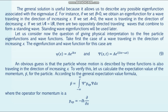If we set |A| = |B|, two oppositely directed traveling waves combine to form a standing wave. Standing wave eigenfunctions will be used later. Let us now consider the question of giving physical interpretation to the free particle eigenfunctions and wave functions. Take first the case of the wave traveling in the direction of increasing x. The eigenfunction and wave function for this case are given by formula number 9.